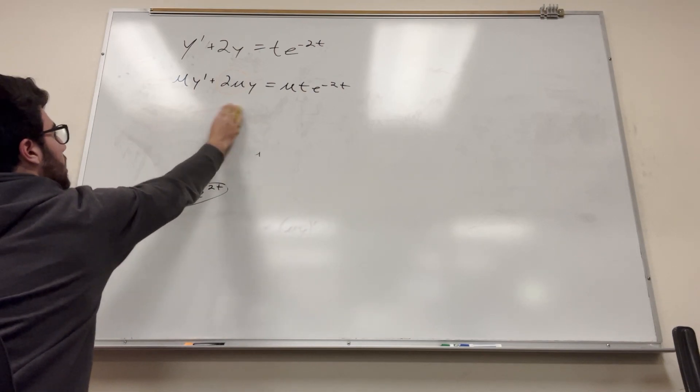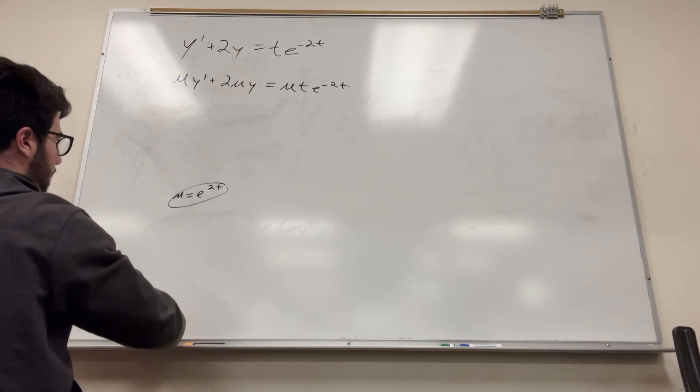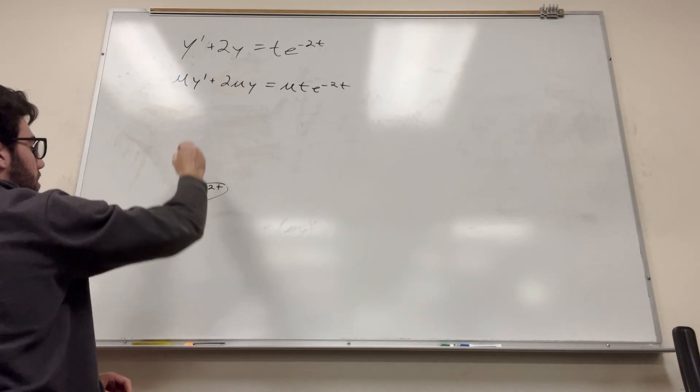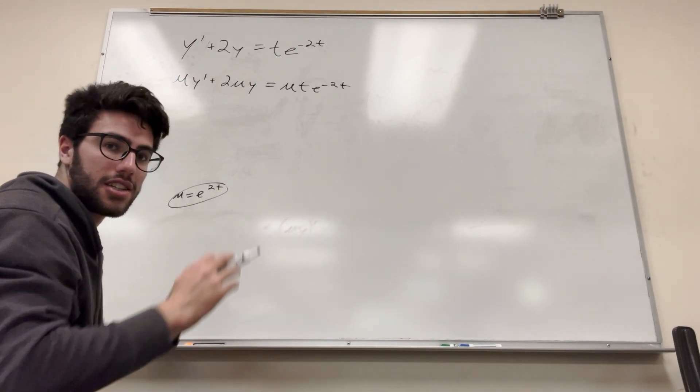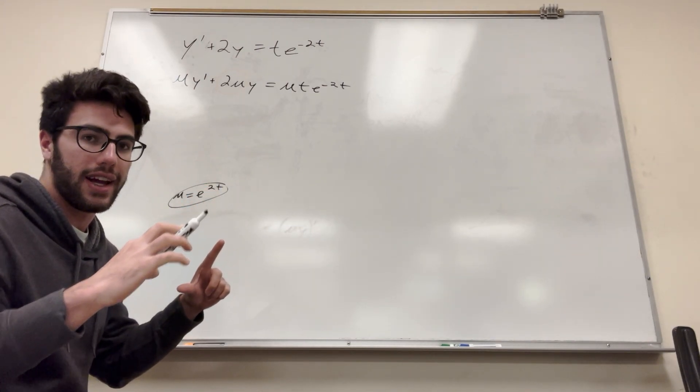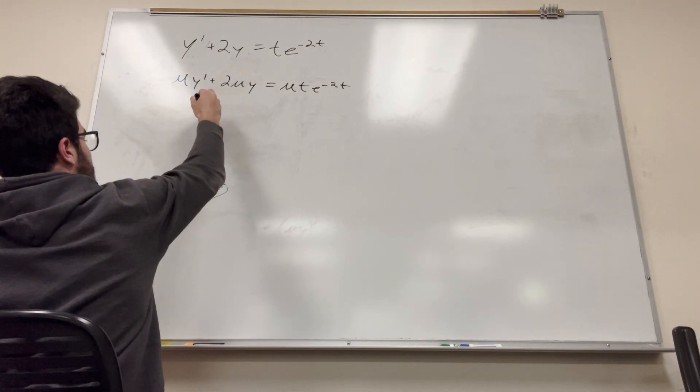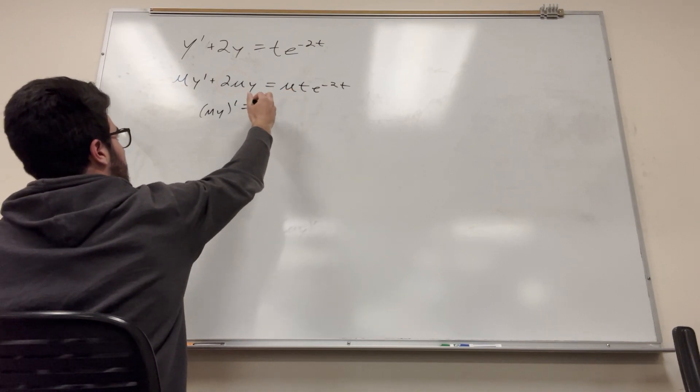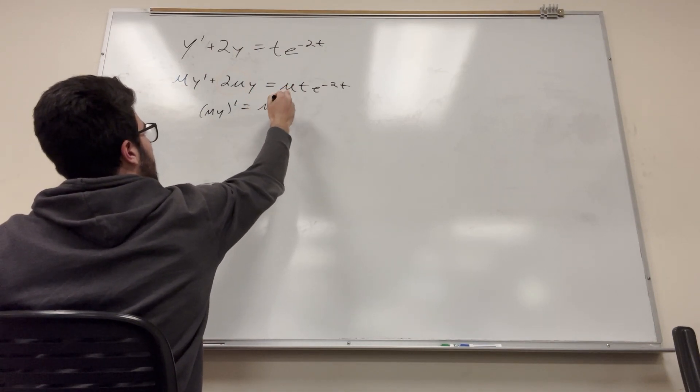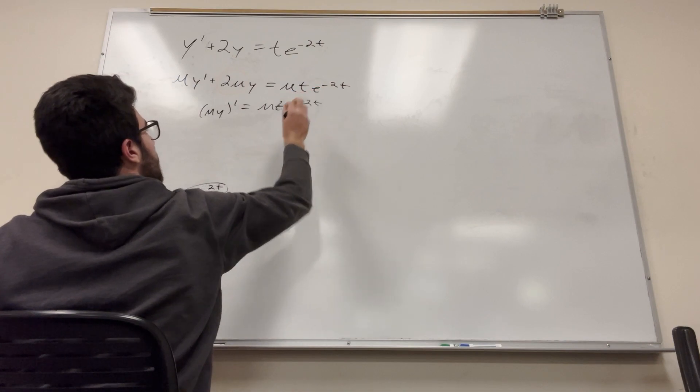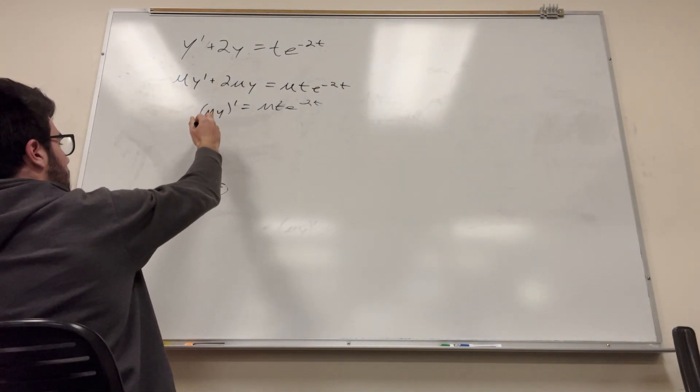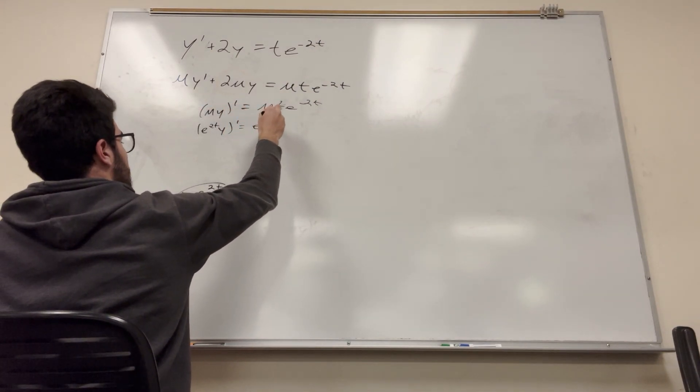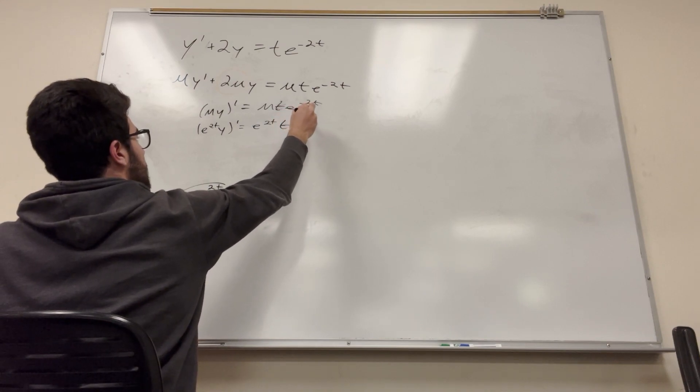Now we can continue on. So like I was saying, when we do the chain rule, you get it in the form of mu y prime plus mu prime y, which is the same thing as the derivative of mu y and then prime of all of that. So what we can just say is mu y prime is equal to mu t e to the negative 2t, and then we plug in what we know. So we're going to get e to the 2t y prime is equal to e to the 2t times t times e to the negative 2t.